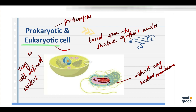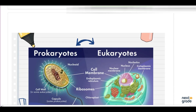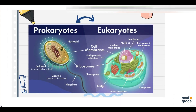Those organisms that have eukaryotic cells are called eukaryotes. As you can see in the diagram, in prokaryotic cells the genetic material is directly submerged in the cytoplasm. But in eukaryotes, you can see a very well-defined nucleus and nucleolus, in which there is also a nuclear membrane.